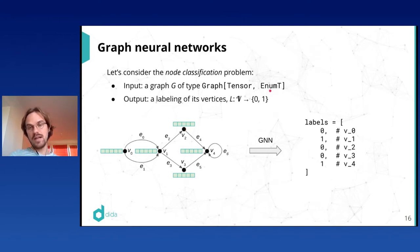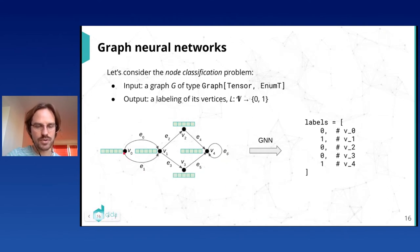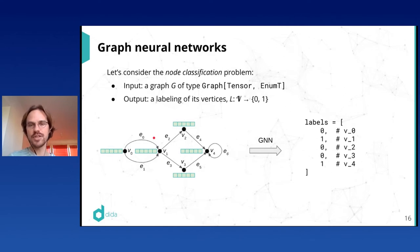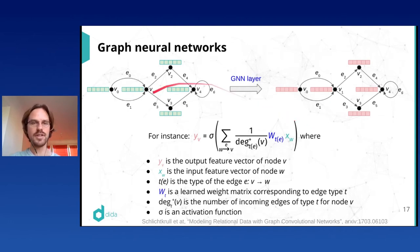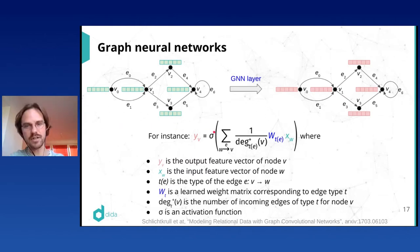I'll make two simplifying assumptions: nodes are labeled with a tensor — some array of numbers of a fixed size — and edges are labeled by an enumeration type, meaning a finite list of possible edge types. For example, in a social network, each node's tensor might be a numerical encoding of person attributes, and edge types might be 'friends', 'coworkers', or 'relatives'. Now I can describe a possible GNN layer, essentially taken from one key paper.